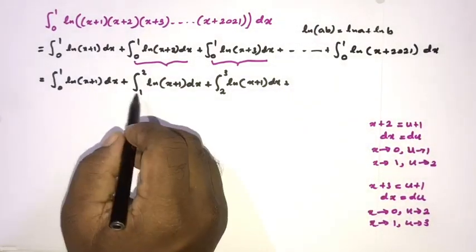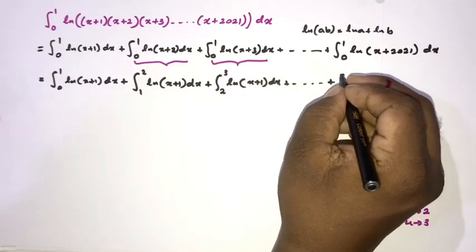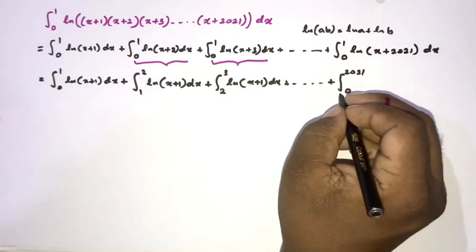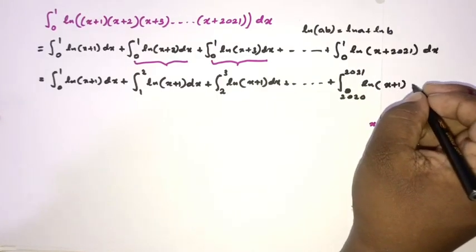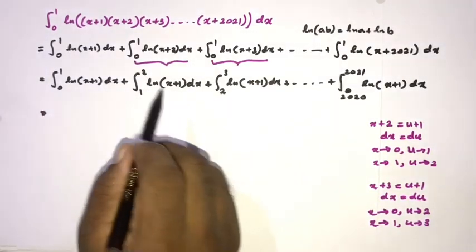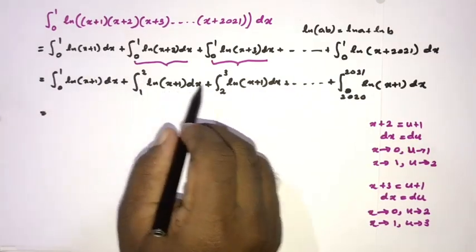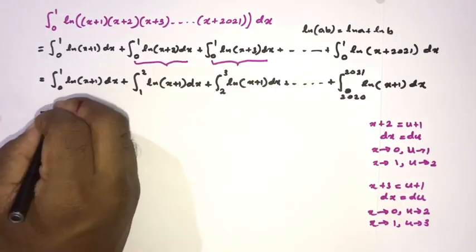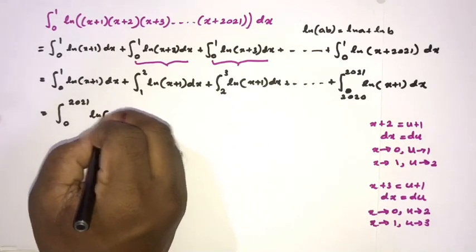We see a clear pattern: we have integral from 0 to 1, then 1 to 2, then 2 to 3, then 3 to 4, 4 to 5, and so on, all of the same function ln(x+1). The last piece runs from 2020 to 2021. So all these integrals together give integral from 0 to 2021 of ln(x+1) dx.